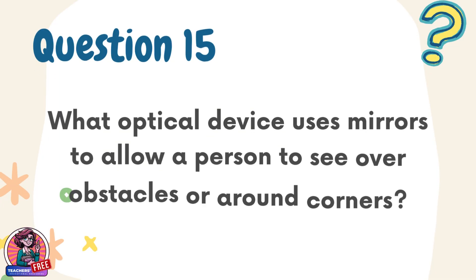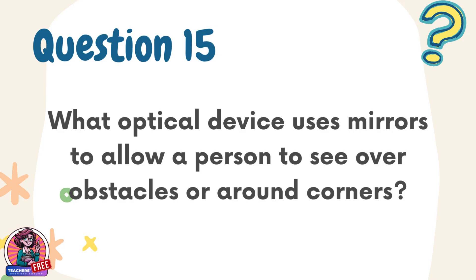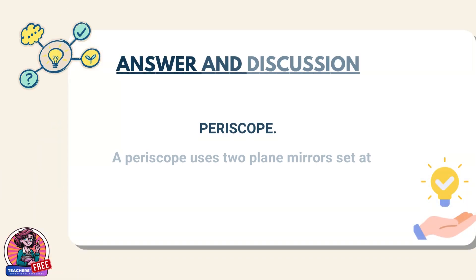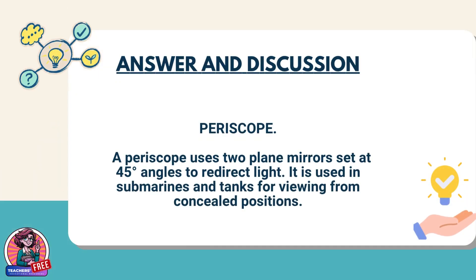Question 15. What optical device uses mirrors to allow a person to see over obstacles or around corners? Answer: periscope. A periscope uses two plane mirrors set at 45-degree angles to redirect light. It is used in submarines and tanks for viewing from concealed positions.